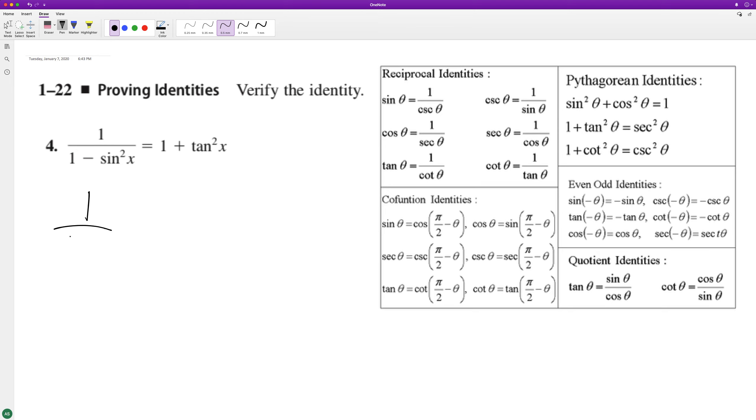So we'll have one over cosine squared x equals one plus tangent squared x.